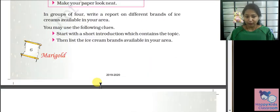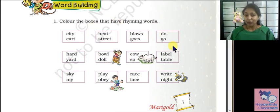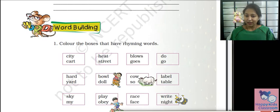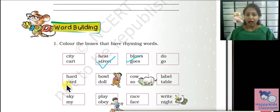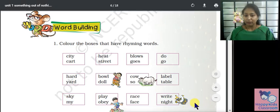Word building: color the boxes that have rhyming sounds to get rhyming words. City/card — no; heat/street — yes; blows/goes — yes; do/go — no; hard/yard — yes; ball/dog — no; cow/so — no; label/table — yes; high/sky/my — yes; play/obey — yes; race/face — yes; right/night — yes.